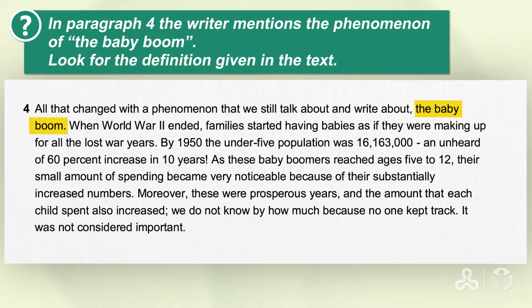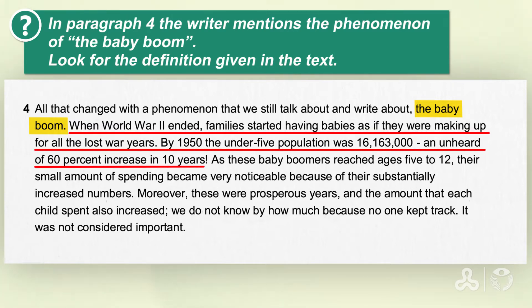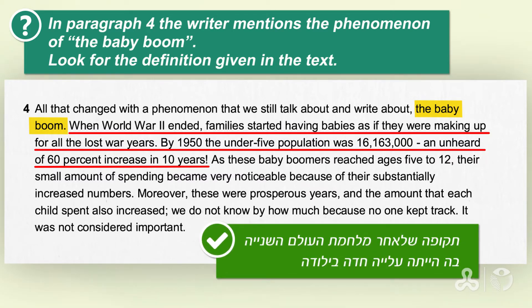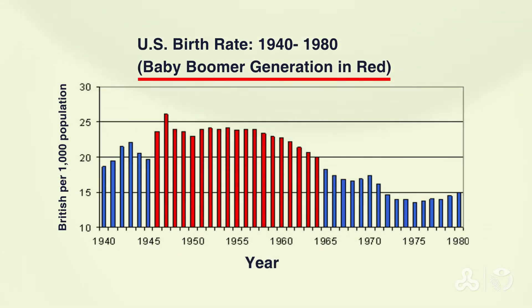Keeping on reading after the expression, we get the writer's meaning: when World War II ended, families started having babies as if they were making up for all the lost war years. By 1950, the under-five population was 16,163,000 — an unheard of 60% increase in ten years. This graph shows us visually the baby boom: the United States birth rates from 1940 to 1980, and there's a huge increase of births during this time. This generation of children born after World War II is called the baby boomers generation.